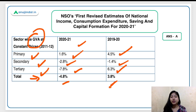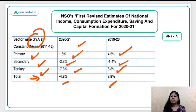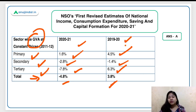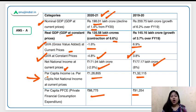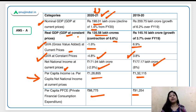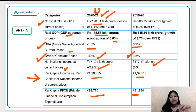These are the numbers with maximum explanation. Memorizing so many figures requires repeated revision. Even if you forget the FY20 numbers for the primary, secondary, and tertiary sectors or per capita income, I strongly recommend memorizing the FY21 estimates for all the components mentioned here.